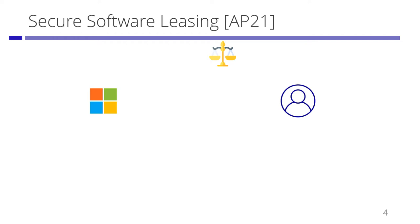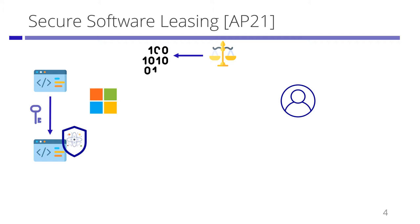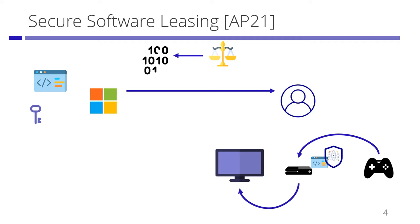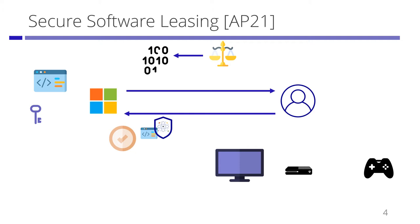Let's start with what is Secure Software Leasing. Secure Software Leasing is a quantum cryptographic primitive. There are a lessor who has the software and a lessee. A central authority generates a common reference string. The lessor generates a protected software by using a secret key. Then the lessor sends it to the lessee. The lessee can run the software on the legitimate platform — that is, they can get an output for an input.